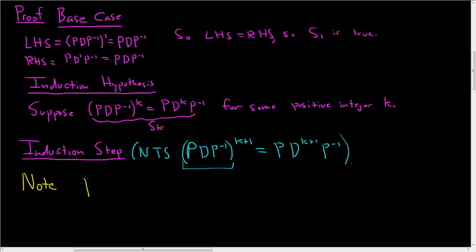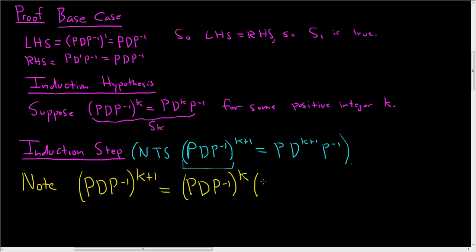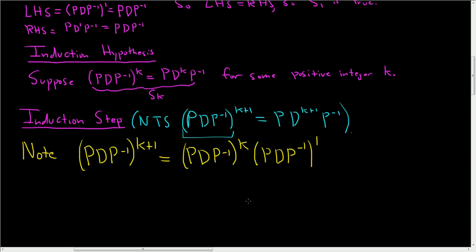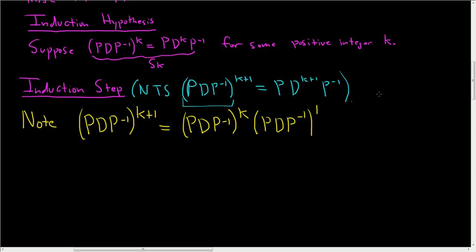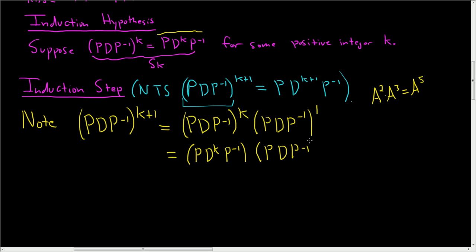Note that (PDP⁻¹)^(k+1) can be written as (PDP⁻¹)^k times (PDP⁻¹)¹, because laws of exponents let us add k and 1 — this works with matrix powers as well, just as A² times A³ equals A⁵. Now we know (PDP⁻¹)^k equals PD^k P⁻¹ by the induction hypothesis, and (PDP⁻¹)¹ is just PDP⁻¹ itself.